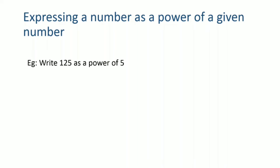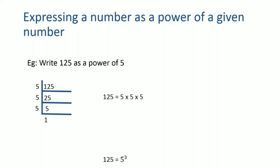So let us get started. 125 divided by 5 gives you 25. That divided by 5 again is 5. Once again we divide by 5 and that gives you 1. We have divided 125 by 5 only until we get 1, so 125 can be written as 5 into 5 into 5, that is 5 to the power 3.